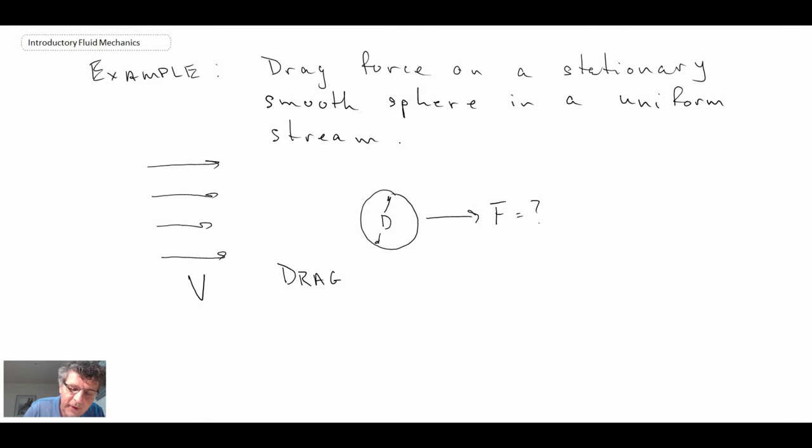So we have drag force F. And other parameters, I've drawn a couple of them here, obviously velocity and the diameter of the sphere. So we have d. We have the velocity, the free stream velocity.